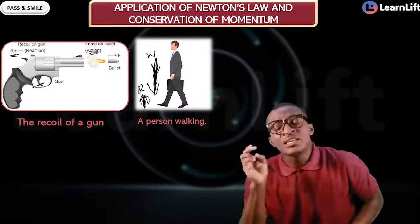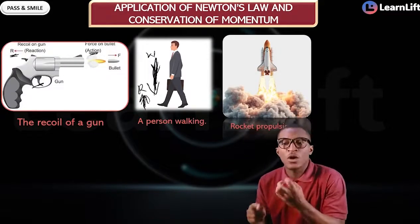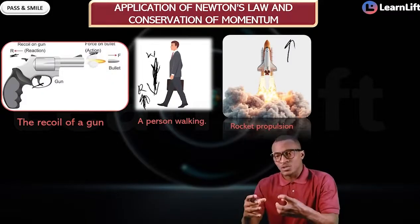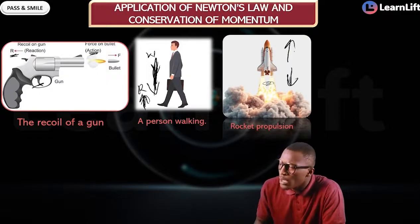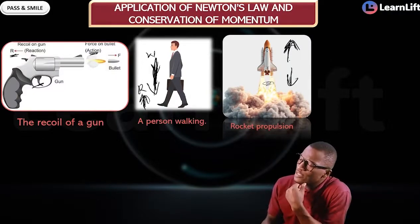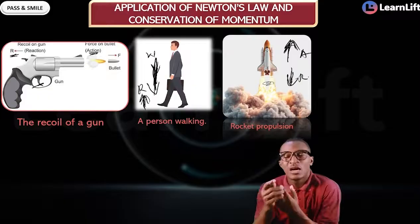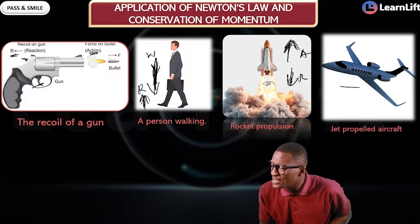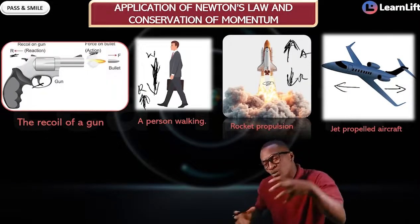The third application is rocket propulsion. The engine burns and exerts a force on the rocket, which makes the rocket move upward. The exhaust from the engine moves downward. Similarly, in a jet aircraft, the plane moves forward while the exhaust moves backward. Action and reaction are equal and opposite.